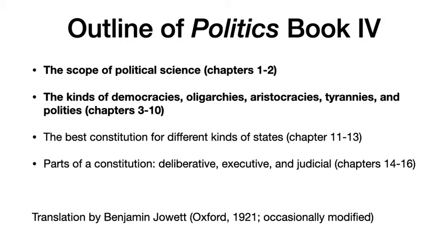To give you an overall outline of Book 4, the first two chapters are focused on the scope of political science and give a general account of what political science is supposed to accomplish. After that, he discusses various kinds of democracies, oligarchies, aristocracies, tyrannies, and polities. He had already discussed the kinds of kingship at the end of Book 3. Following this, he discusses what is the best constitution for different kinds of states, and then he discusses the various parts of a constitution: the deliberative, executive, and judicial parts.